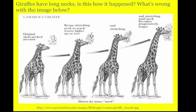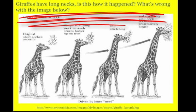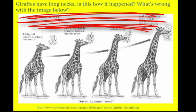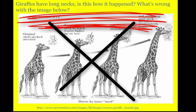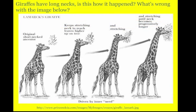So what I want you to do is explain to me what's wrong with this idea. Now think about natural selection and what we've been talking about. What are the things you have identified as incorrect here? Pause, think about it, and unpause when you're ready to discuss.